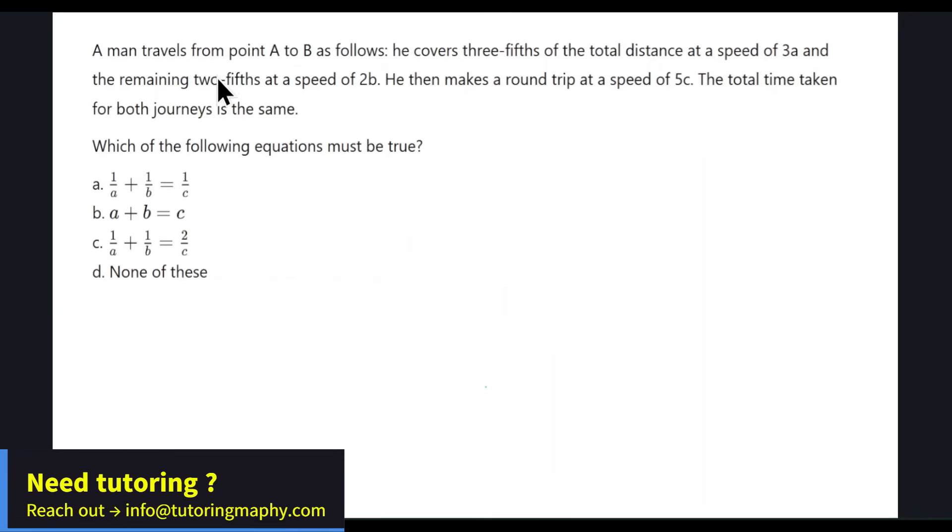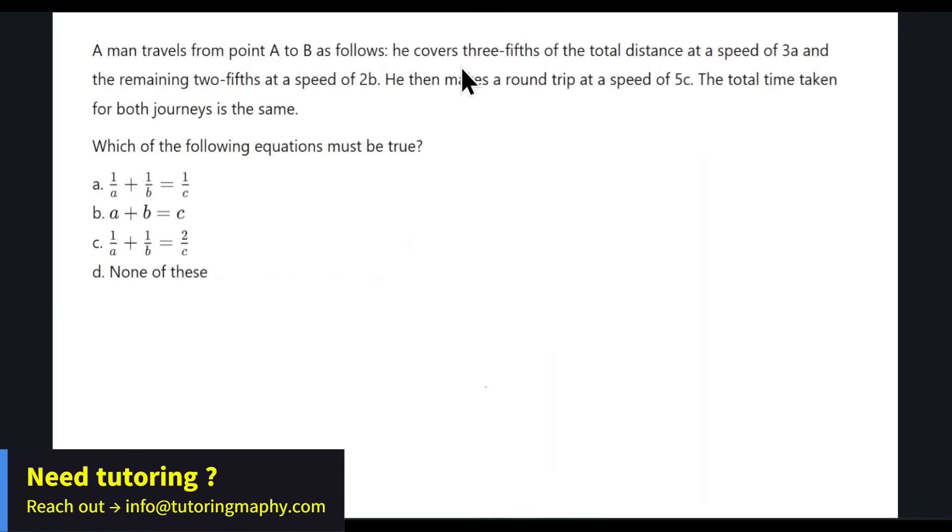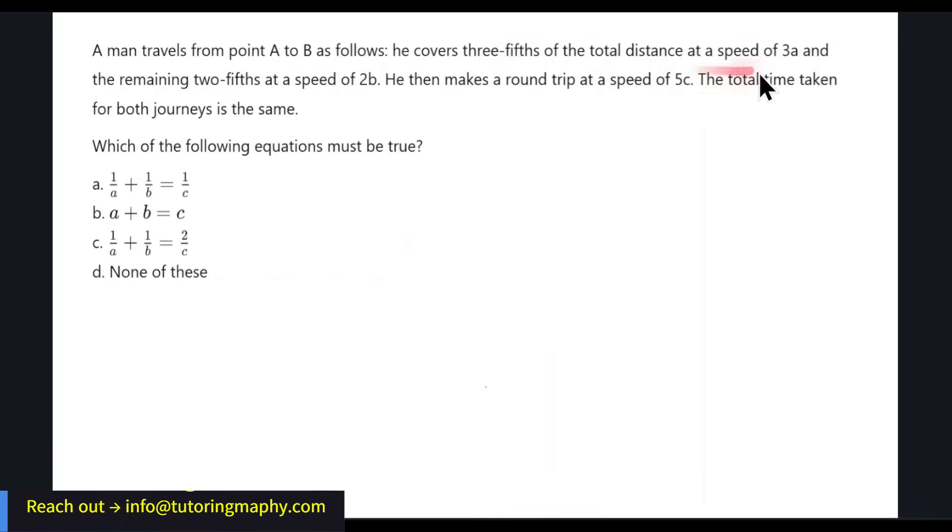This one says that a man travels from A to B as follows. He covers three-fifths of the total distance at speed 3A and two-fifths at 2B. He then makes a round trip at a speed of 5C. The total time taken for both journeys is the same. The only reason why I took this question is because this involves a formula that is usually used in physics: time equals distance over speed.